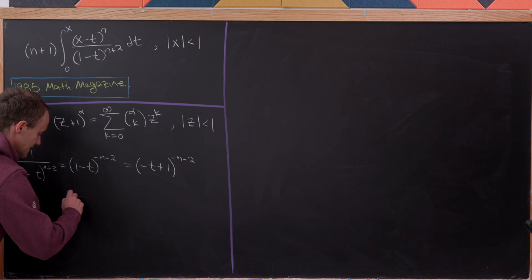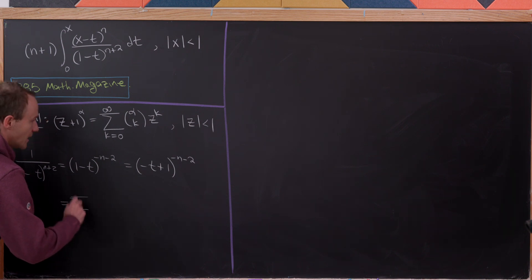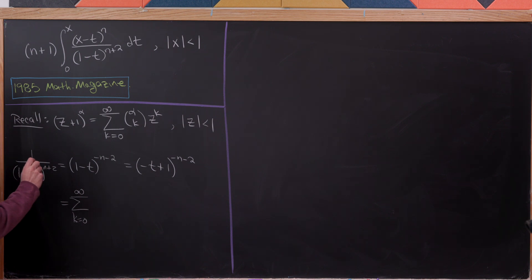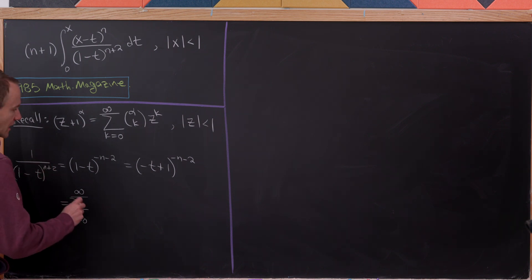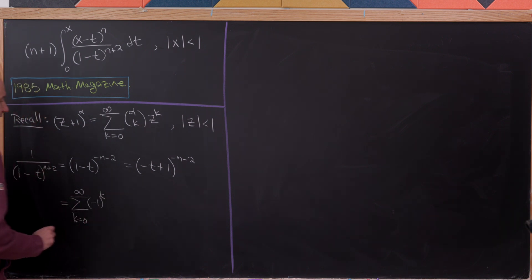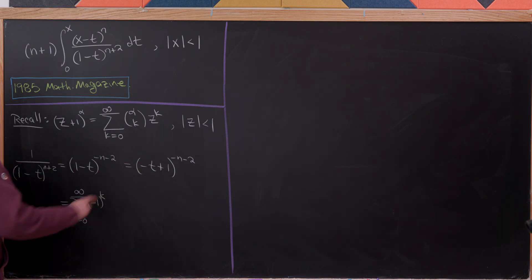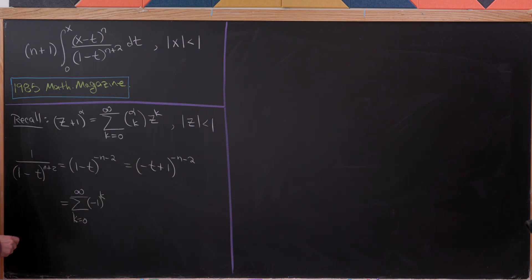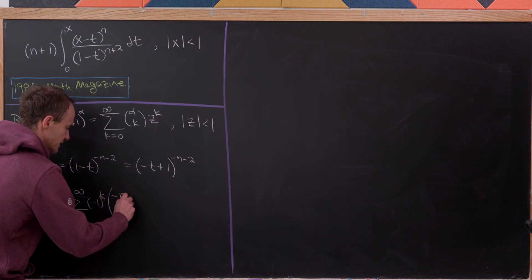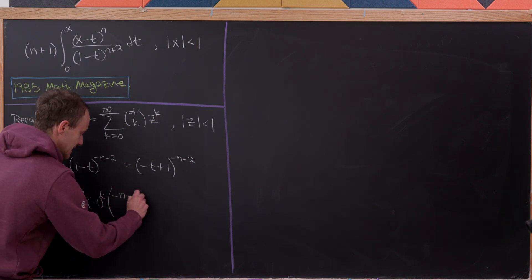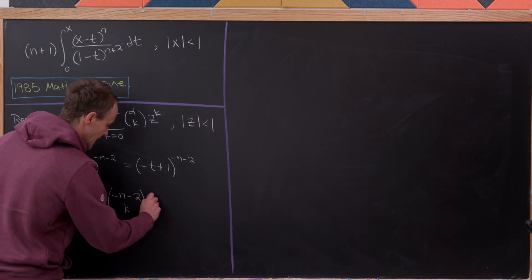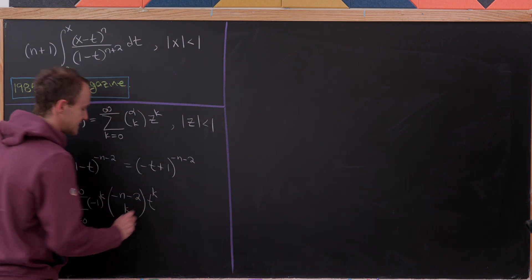That gives us the sum as k goes from 0 to infinity of minus 1 to the k — taking the minus sign from negative t out front — times the binomial coefficient minus n minus 2 choose k, times t to the k.